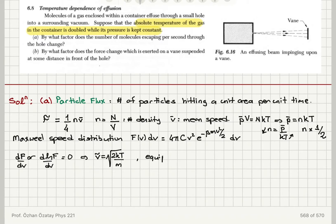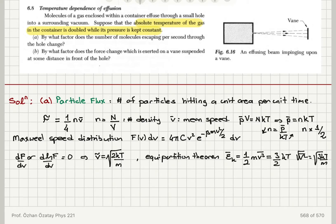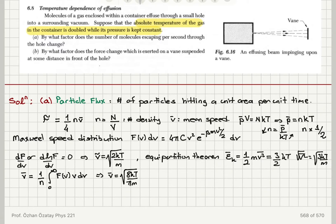For the RMS speed, we use the equipartition theorem: the average kinetic energy per particle (1/2)mv̄² = (3/2)kT, giving v_rms = √(3kT/m). For the mean speed v̄, we calculate (1/n)∫f(v)·v dv over all possible speeds, which yields v̄ = √(8kT/πm). The ordering is: most probable speed < v̄ < v_rms.